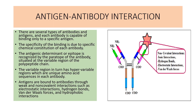There are several types of antibodies and antigens, and each antibody is capable of binding to a specific antigen. The specificity of binding is due to the specific chemical constitution of each antibody. The antigenic determinants, or epitopes, are recognized by the paratope of the antibody situated at the variable region of the polypeptide chain. The variable region in turn has hypervariable regions which are unique amino acid sequences in each antibody. The antigens are bound to antibodies through weak and non-covalent interactions such as ionic interactions, hydrogen bonds, electrostatic interactions, and van der Waals forces.